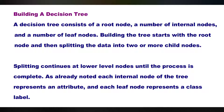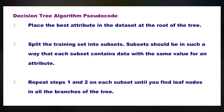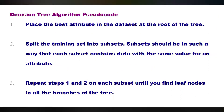Building the tree starts with the root node and then splitting the data into two or more child nodes. Splitting continues at lower level nodes until the process is complete. Each internal node of the tree represents an attribute and each leaf node represents a class label. Decision tree algorithm pseudocode has the following steps. Step 1: place the best attribute in the dataset at the root of the tree. Step 2: split the training set into subsets such that each subset contains data with the same value for an attribute. Step 3: repeat steps 1 and 2 on each subset until you find leaf nodes in all the branches of the tree.